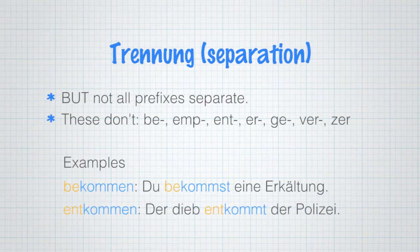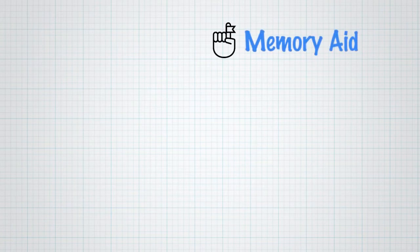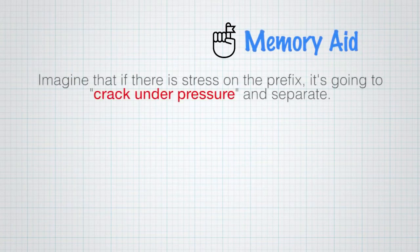So as you can see, those particular prefixes just stay the way they are. They're just verbs. To tell the difference, the easiest way to work this out is to imagine that if there is stress on the prefix, it's going to crack under pressure and separate and hide at the end of the sentence.